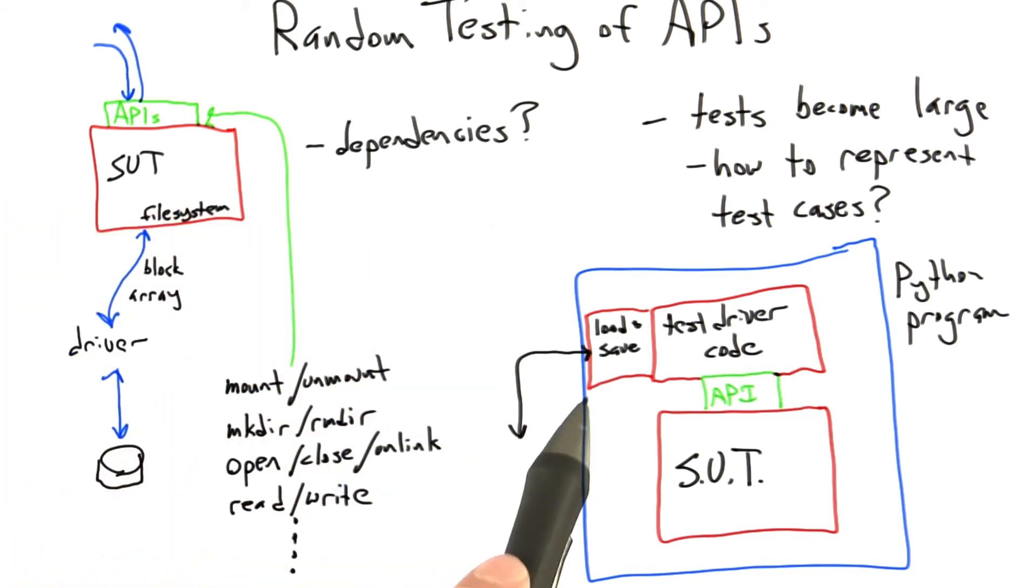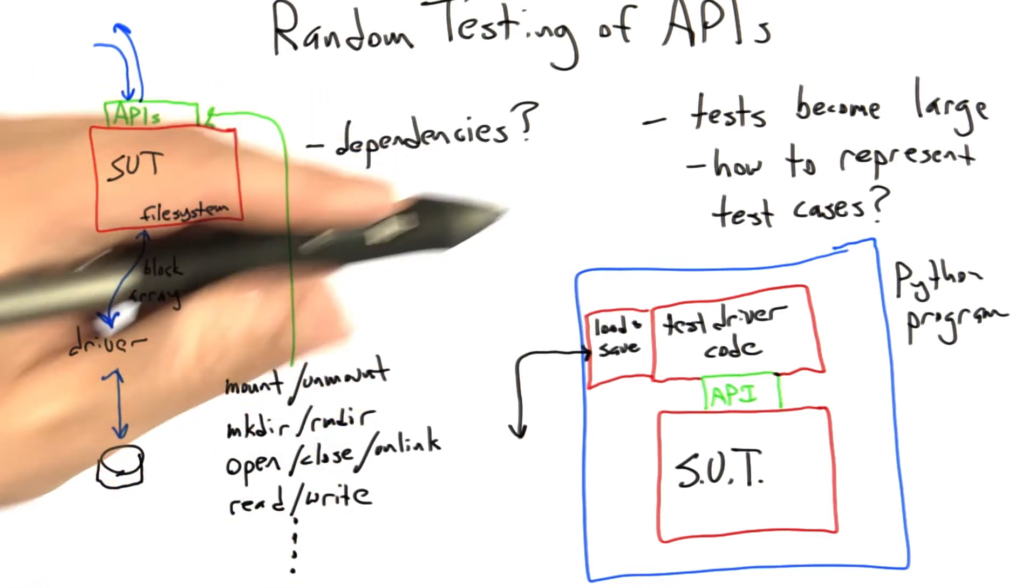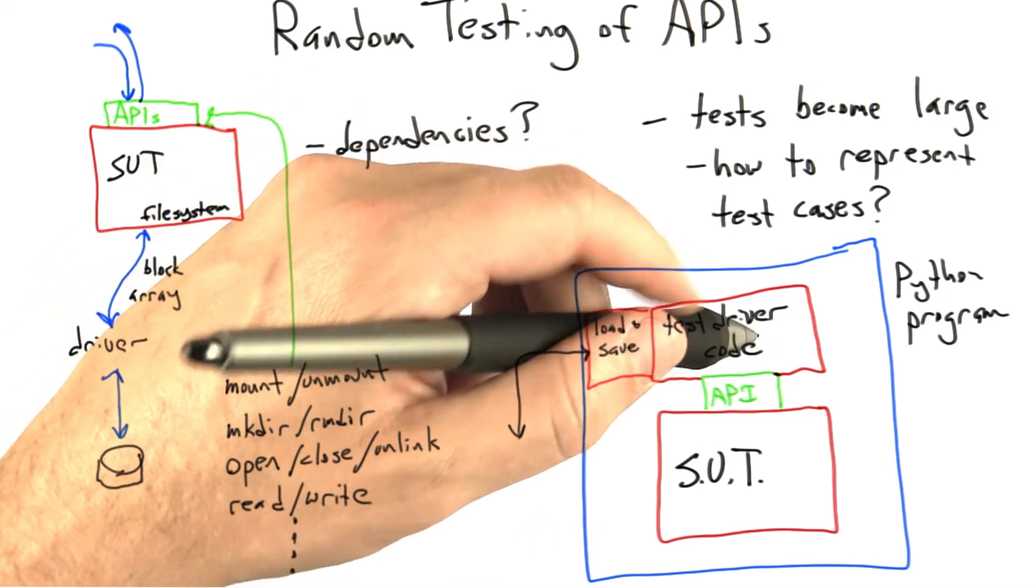So for example, if we wanted to represent a sequence of file system calls as a text file, we could just have the word makedir followed by whatever the arguments to makedir are. And then the loading and saving code would need to either parse those files in order to create a test case in memory or unparse them, that is to say, pretty print them to disk in order to save a test case.